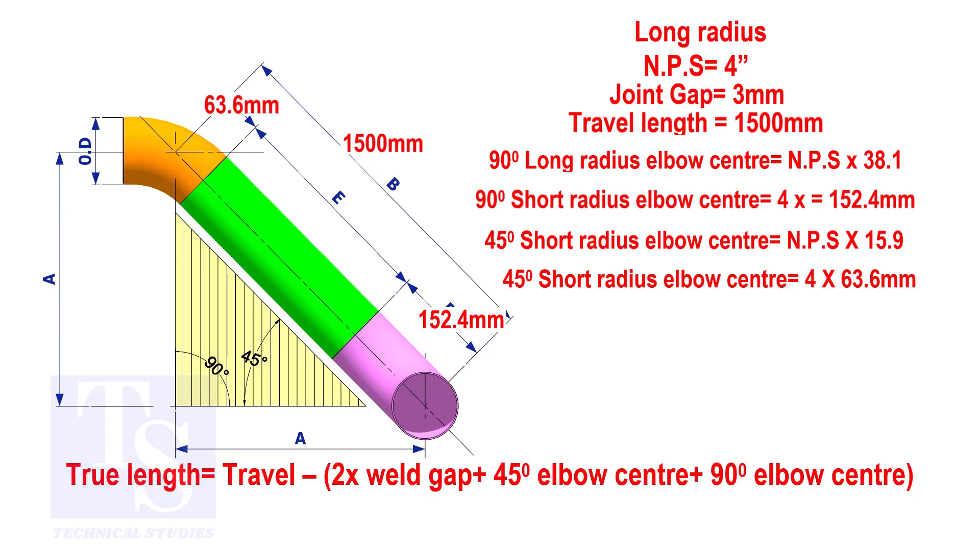Apply the calculation. The true length of the pipe is 1278 millimeters.